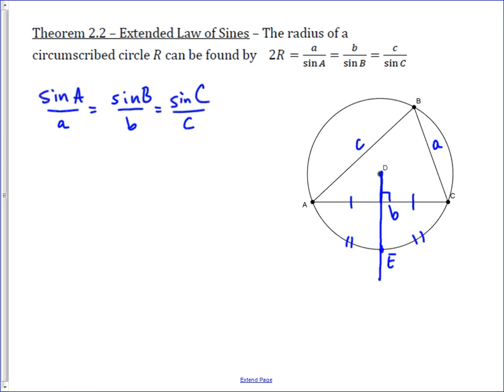Well, we also know something about arc AC based on angle B, and that is angle B is an inscribed angle, and the arc is always equal to twice the measure. We're going to call, for the sake of this problem, we'll use the variable B, the measure of B.